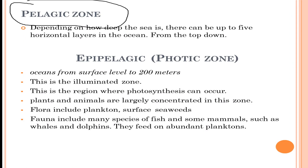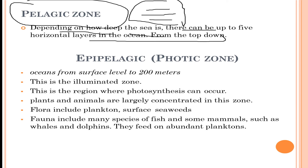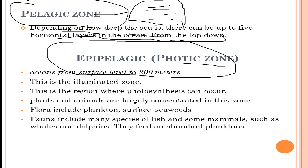Now let's talk about the pelagic zone. There can be up to five horizontal layers in the ocean from top to bottom. The entire collection of layers is called the pelagic zone, and it contains multiple sub-layers. The first layer is the epipelagic zone — the topmost layer, also called the photic zone, spanning from the surface to 200 meters. This is the illuminated zone where photosynthesis can occur and plants and animals are largely concentrated.